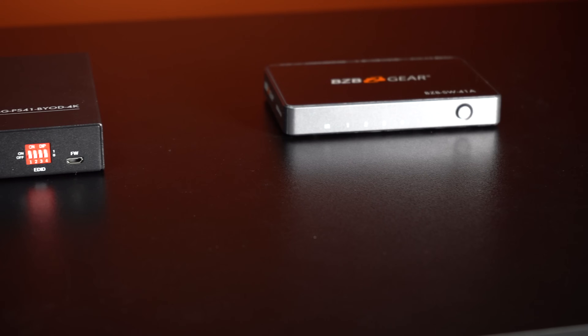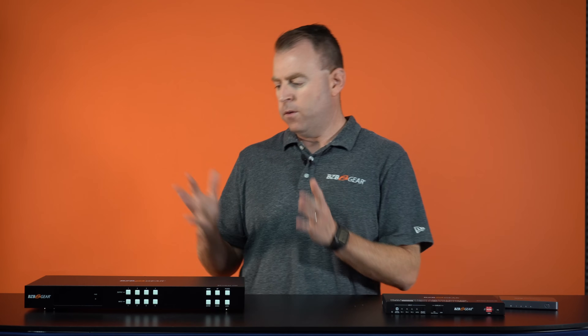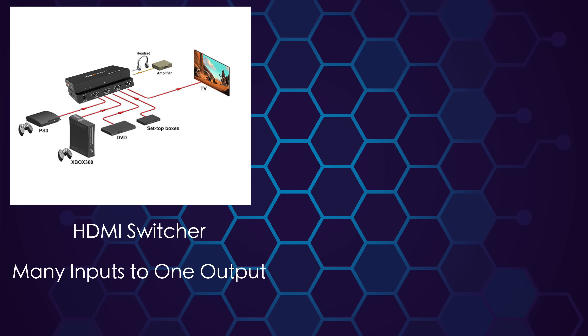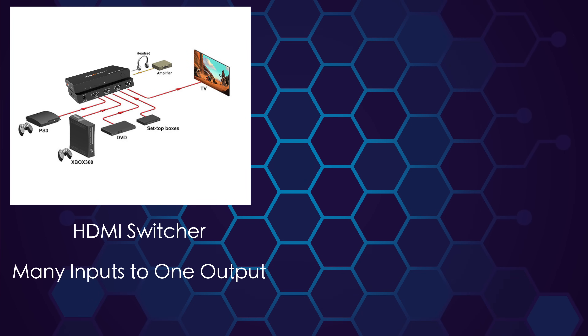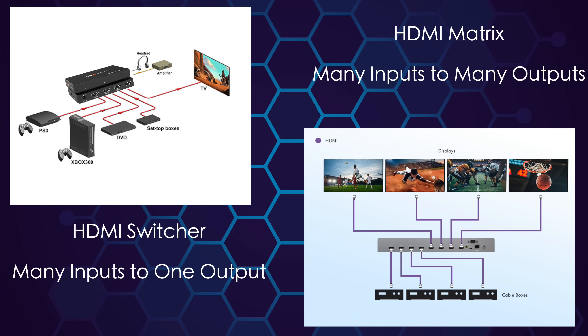Over here to my left we have a couple of HDMI switchers — a little push switcher as well as a presentation switcher — and over here is one of our matrices. The biggest difference between the two is that HDMI switchers are typically multiple inputs to one output, whereas HDMI matrices are multiple inputs to multiple outputs.